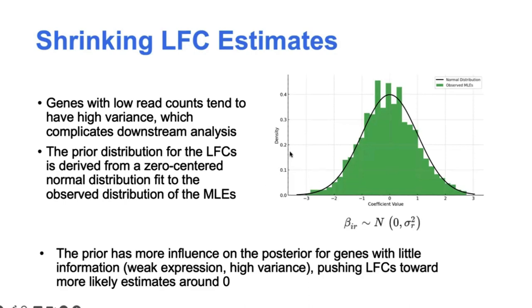And in a similar way to the shrinkage for the dispersion, the effect of this prior is to push the log fold changes of genes with low expression or high variance towards those more likely estimates near zero. And the exact strength of that shrinkage is controlled by something called the observed Fisher's information, which essentially just captures the amount of information in the data that can be used for estimating the log fold change. So kind of all of these altogether, all these shrinkage methods and the initial distribution assumptions of DESeq come together to provide a stronger estimate of the log fold change and its variance for each gene.